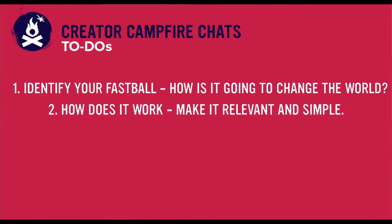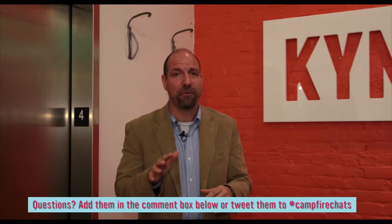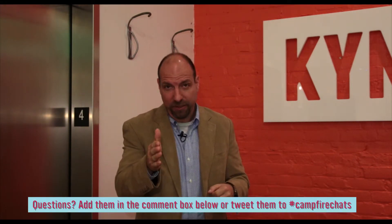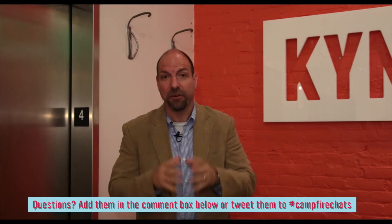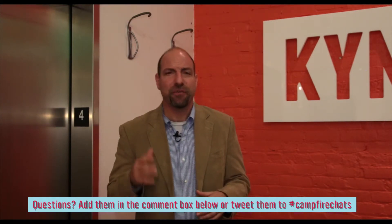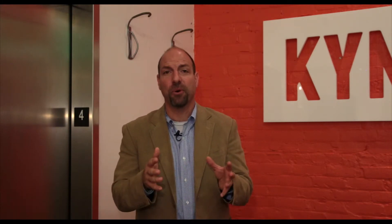Next, identify how your project works. You've already identified the fastball and how it's going to change the world — now you need to very concisely and clearly identify how it works. Be cautious: don't go into elaborate detail; that's not the point here. Capture the essence, deliver it quickly, and move on to the next item. You've captured their imagination, got them engaged, shown them how it works — now you need to know what you want. What if somebody asks, 'What are you looking for?' Either it's that magic number or the next step you need to move forward. Identifying that and communicating it clearly and quickly will help you as you get closer to throwing that fastball.